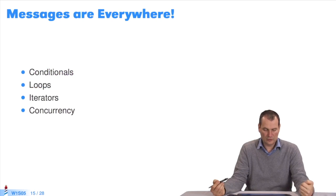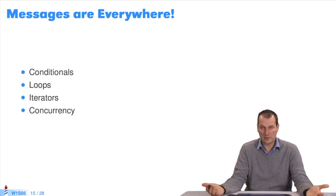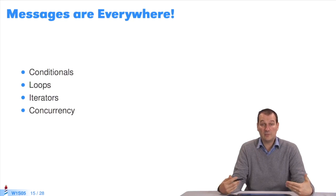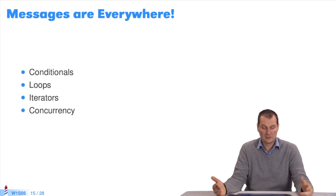What we can also see in this example are semicolons. We call this a cascade, which sends all the messages to the same object. You don't need a temporary variable and you can write more compact code. You have to understand that messages are everywhere — conditionals, loops, iterators, and concurrency are expressed as messages. My explanation about those three messages applies across the board. It's the cornerstone of the system. There's nothing other than these messages.